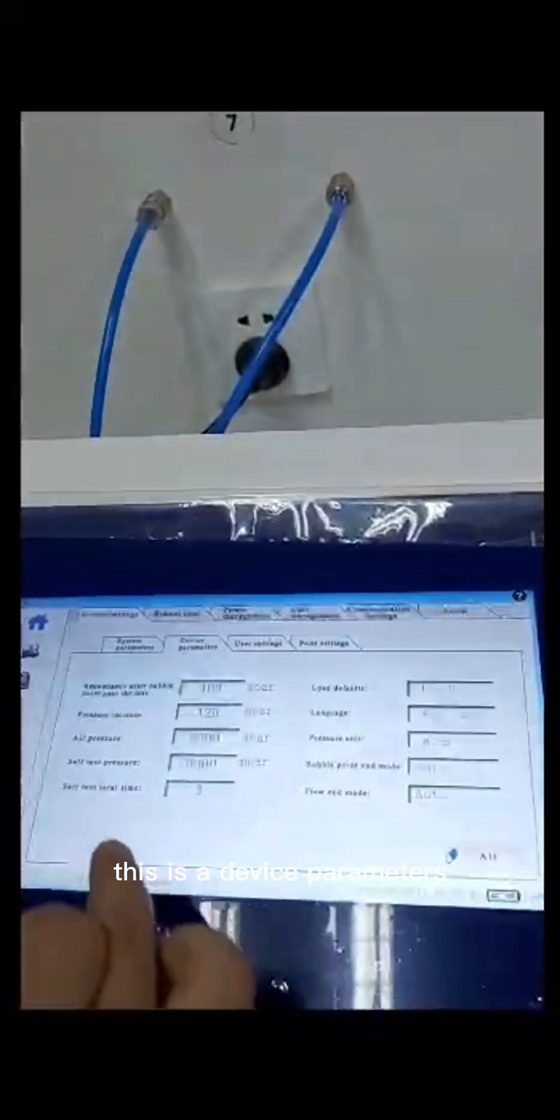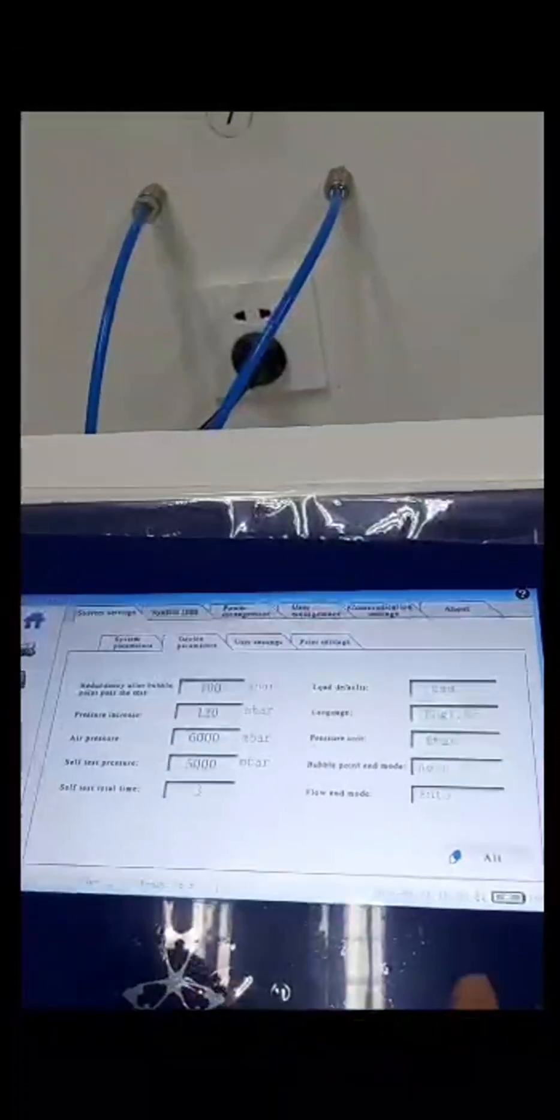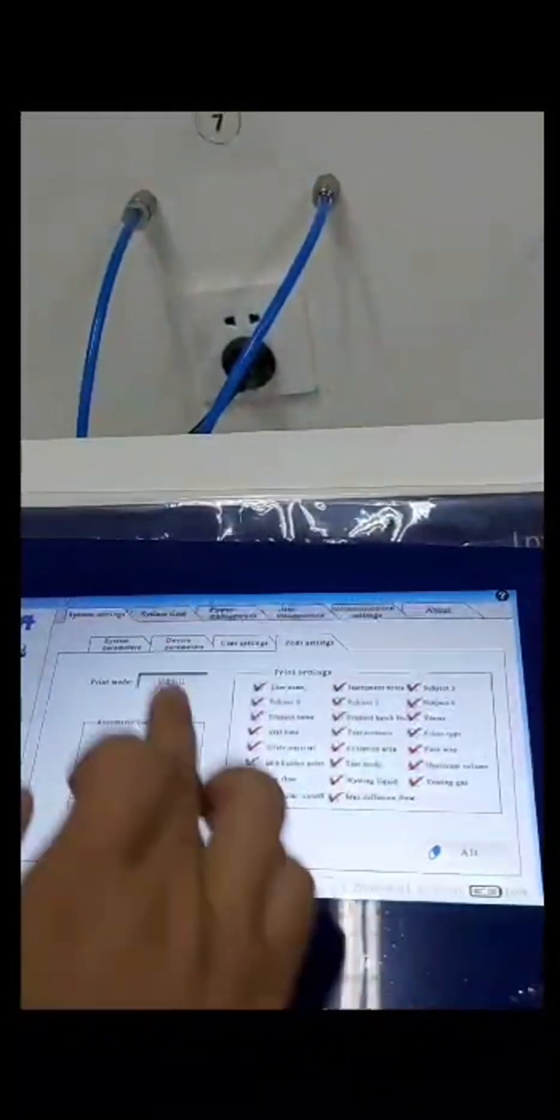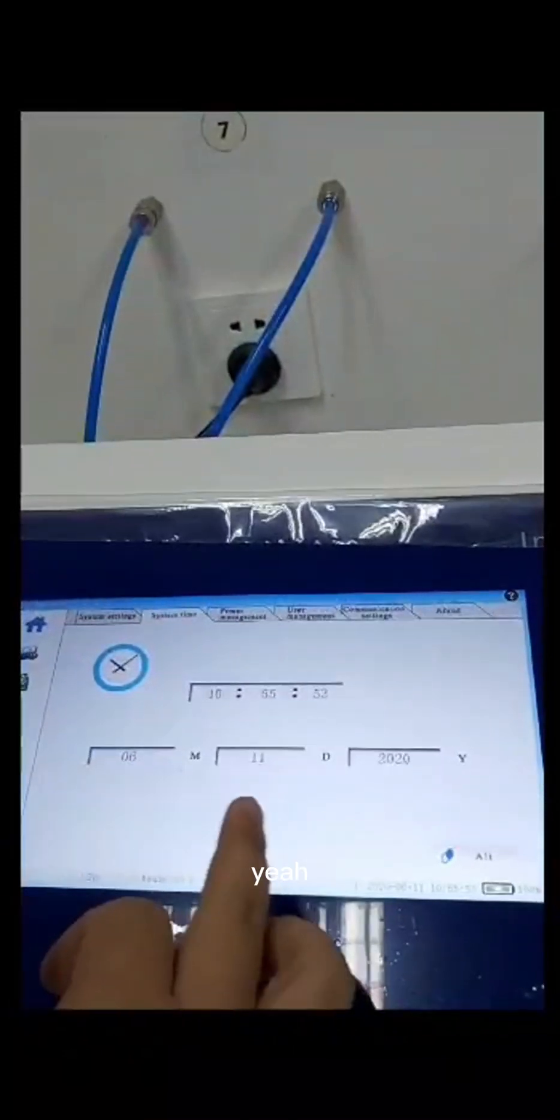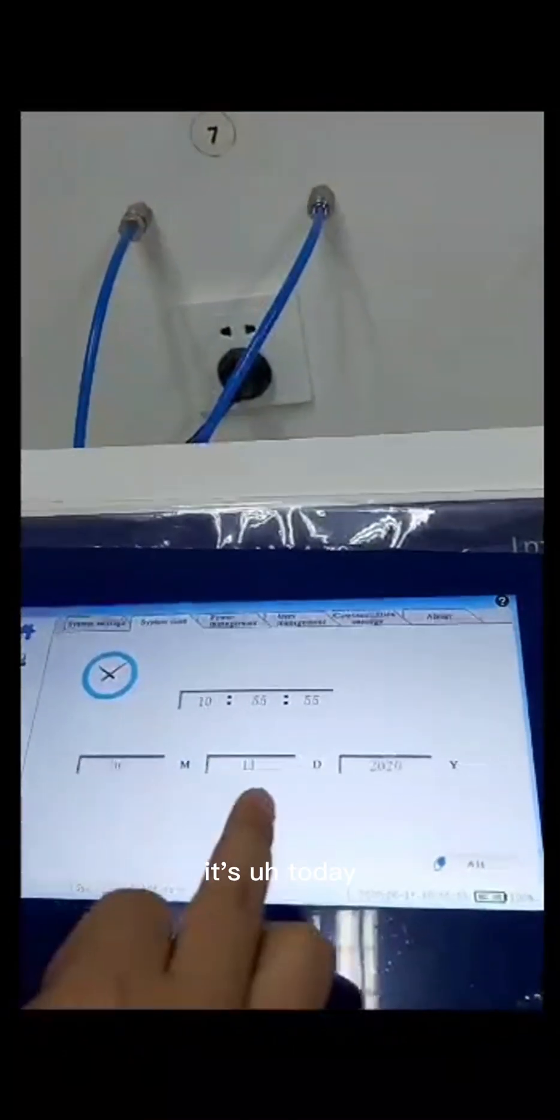This is device parameters. User settings, and print settings. System time. Is today.